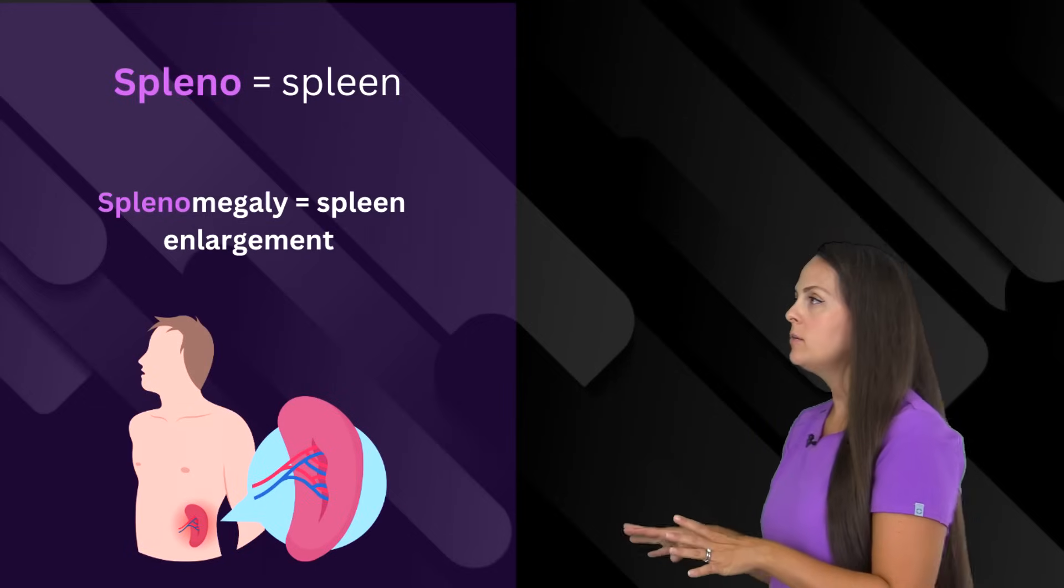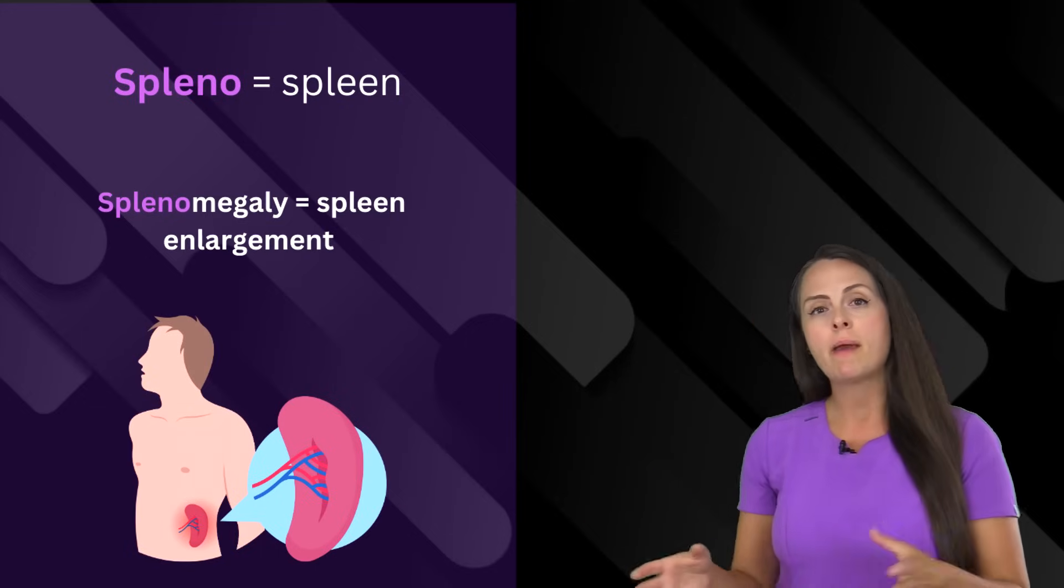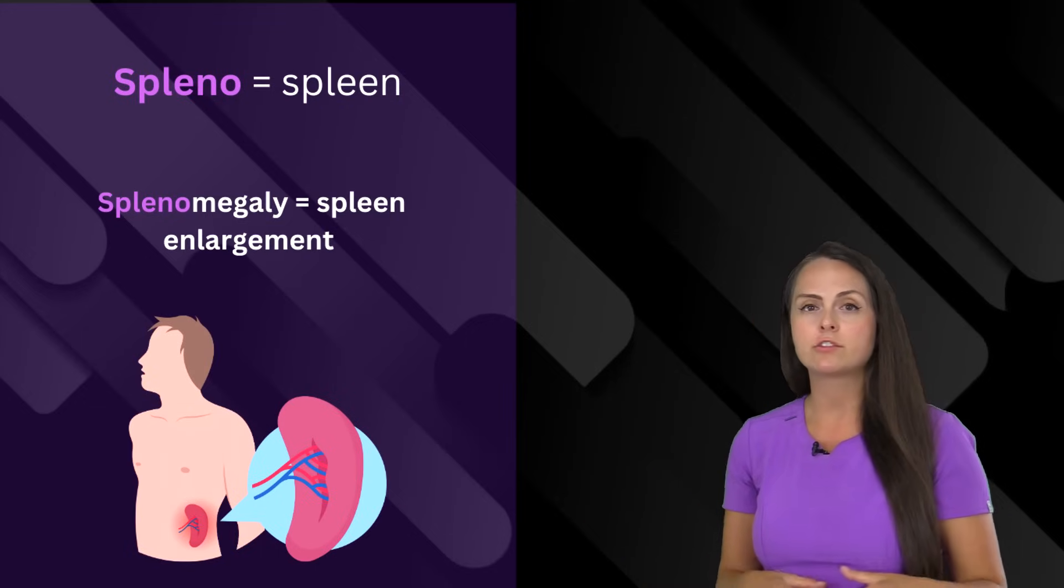And the prefix spleno means spleen. If a person has splenomegaly, that means they have enlargement of their spleen.